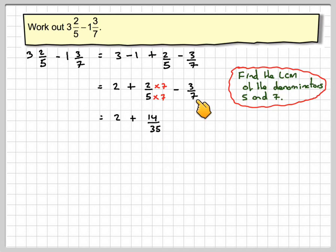For this fraction, we multiply by 5 and do the same for the numerator. So we have minus 15 over 35.